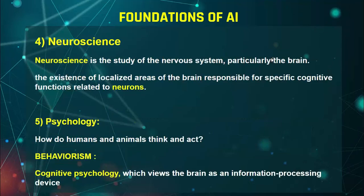The fourth foundation of artificial intelligence is neuroscience. We all know our brain works continuously. Neuroscience is a biological term but it is essential in AI. Neuroscience is the study of the nervous system — our whole body runs on the nervous system and our decisions are made through the nervous system. So if we want to create an intelligent machine, we need to understand neuroscience, particularly the brain.